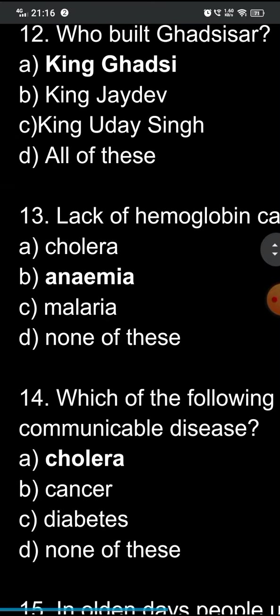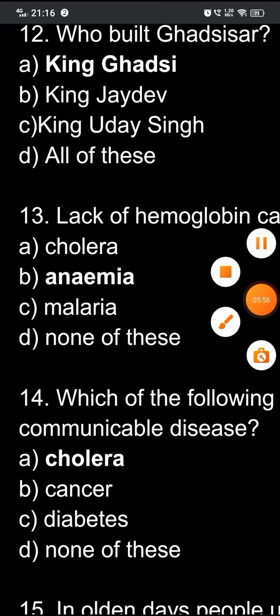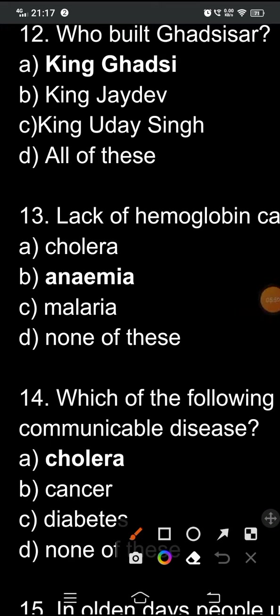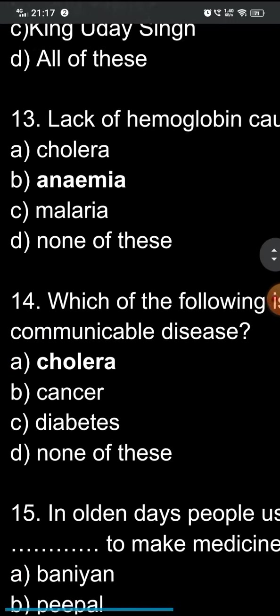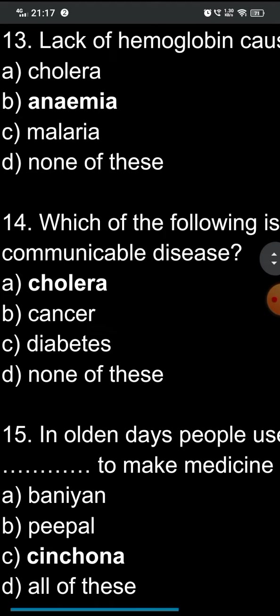Question fourteen: which of the following is a communicable disease? The options are: A) cholera, B) cancer, C) diabetes, D) none of these. A communicable disease is one that is easily transferable from one person to another. The correct answer is option A — cholera.